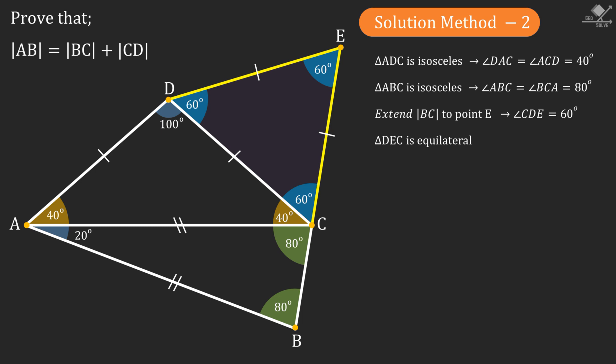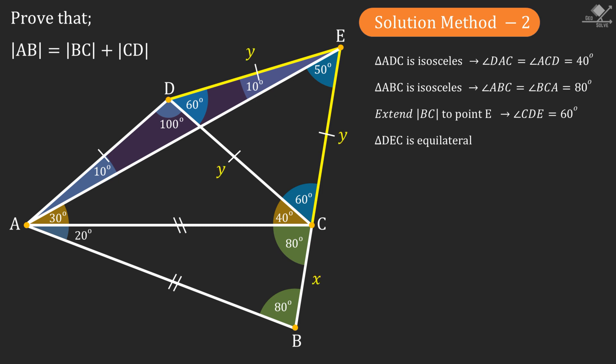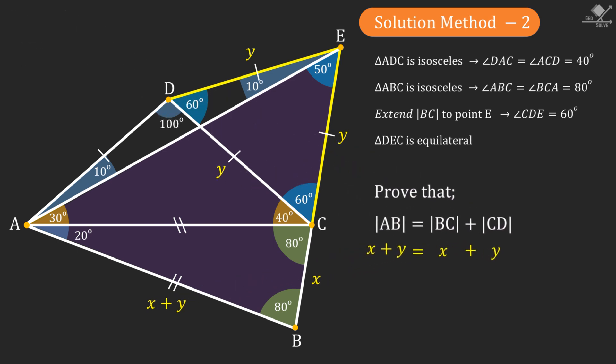Now if we connect point E and A we will have an isosceles triangle ADE, and from here its base angles will be 10 degrees each. Now let's call the length of line segment BC as x and CE as y. Triangle ABE has 50 degree equal base angles, so its corresponding sides must be equal, and from here we can see that AB is equal to BC plus CD.